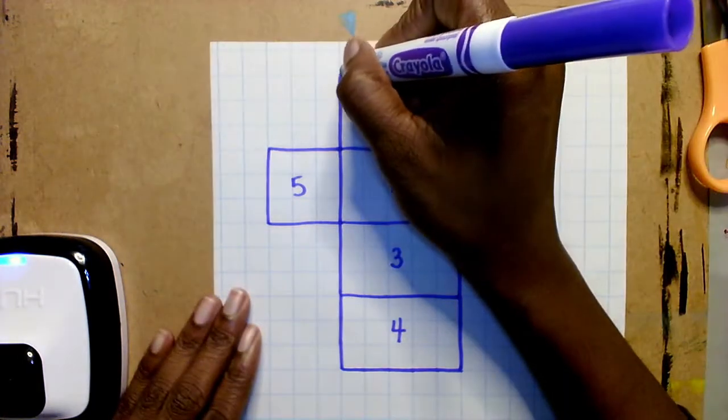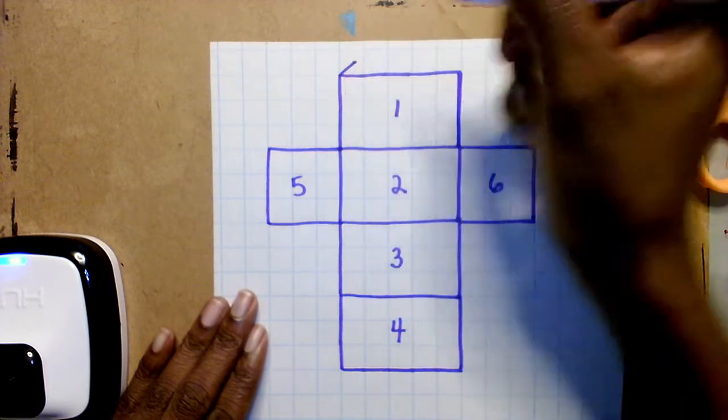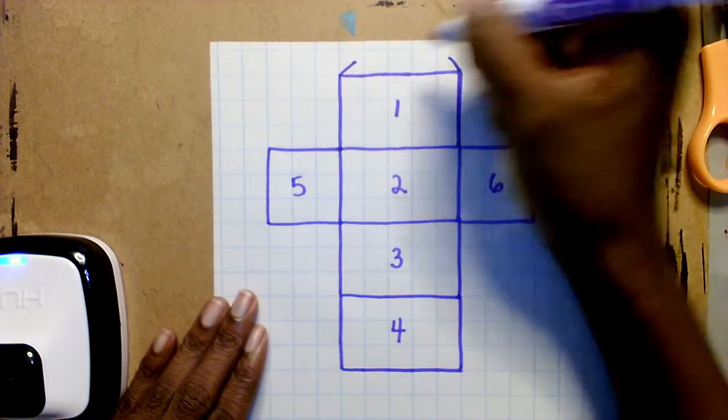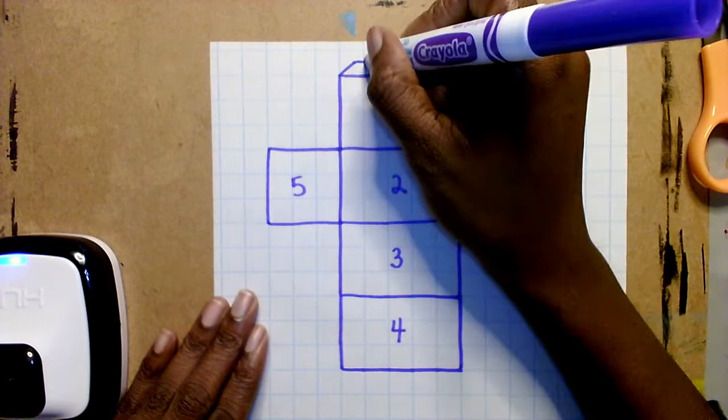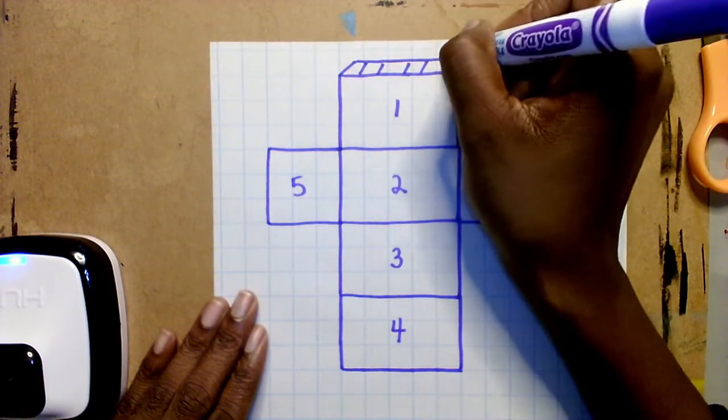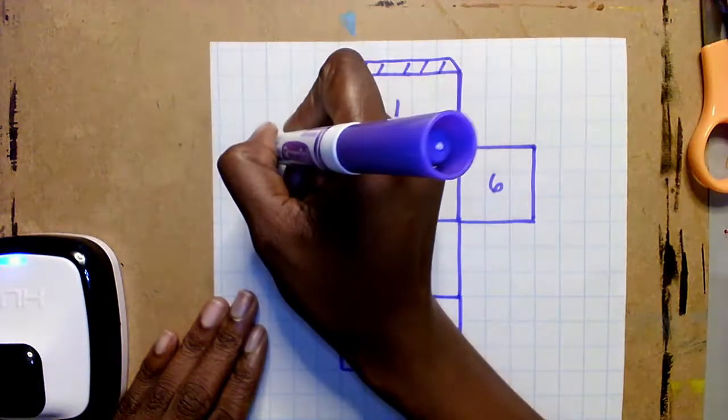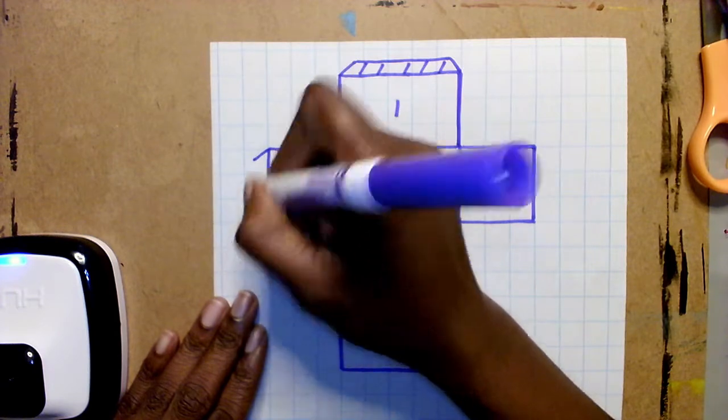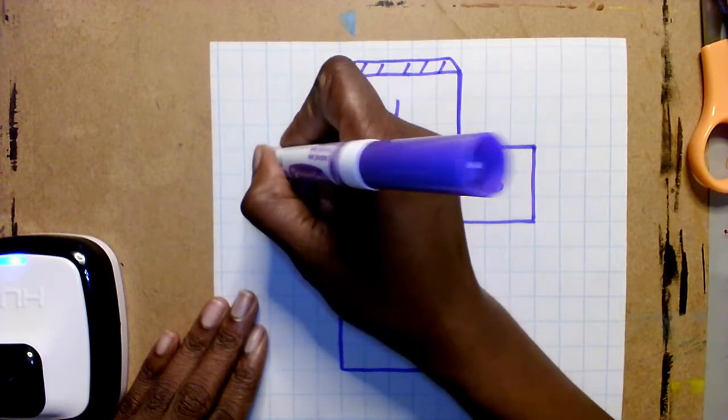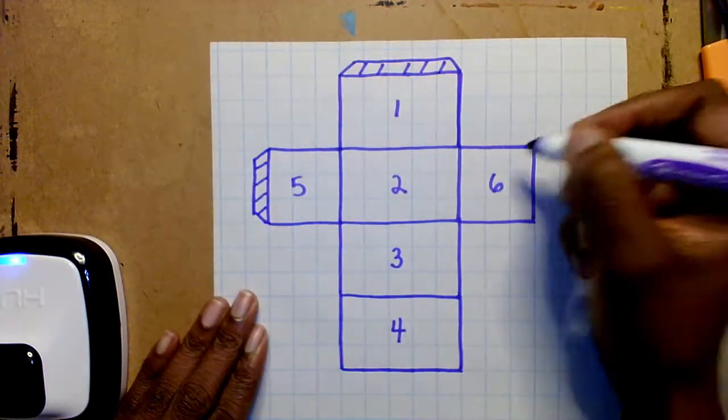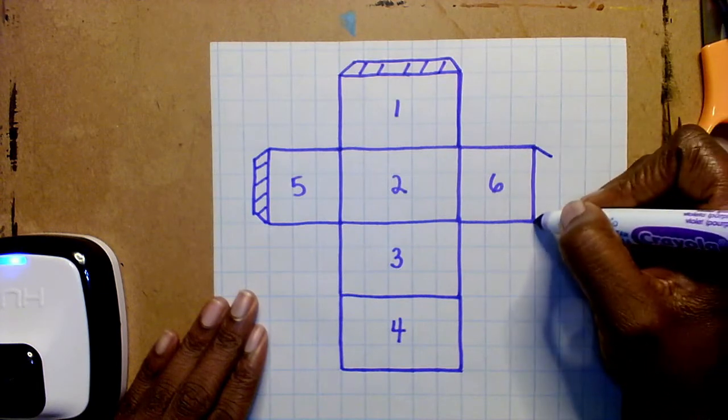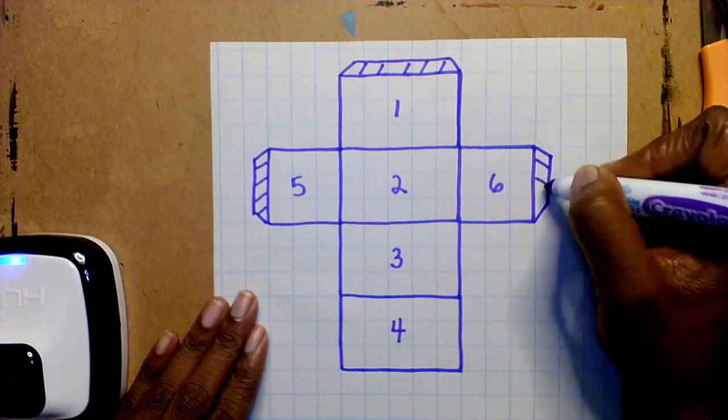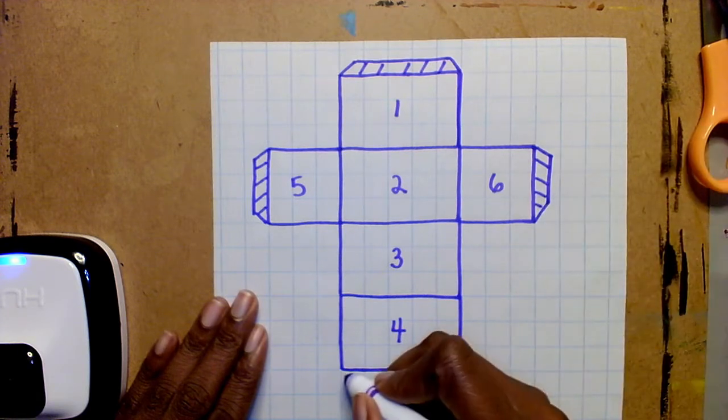So just like for the cube, I'm going to draw a tab on the top of one, on the side of five, on the side of six, on the bottom of four.